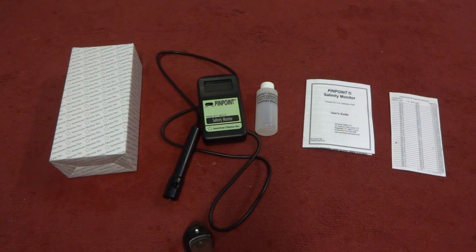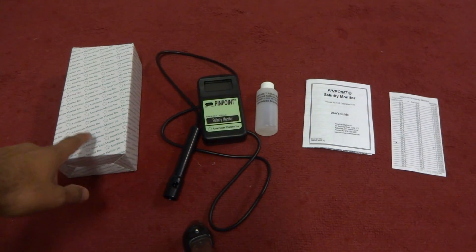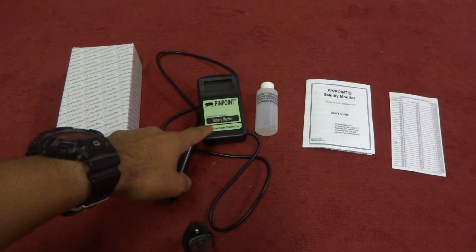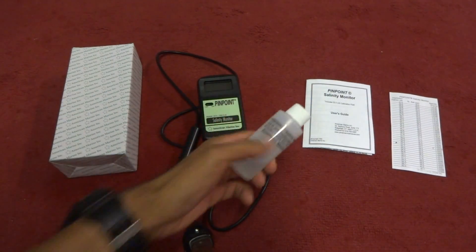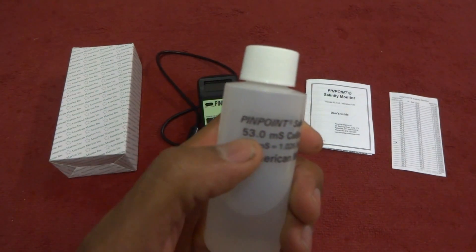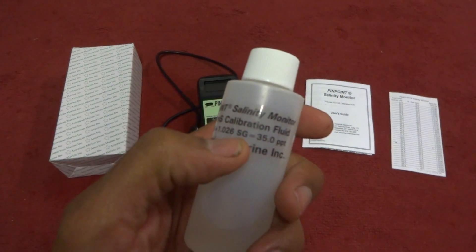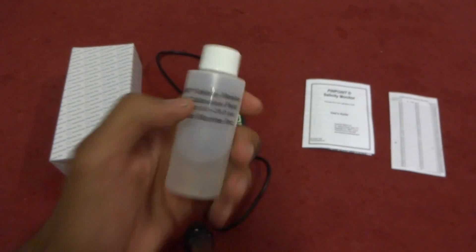When you purchase the Pinpoint Monitor you get the box that it comes in, the monitor itself, calibration fluid which the target number is going to be 53 ms or 35 parts per thousand.